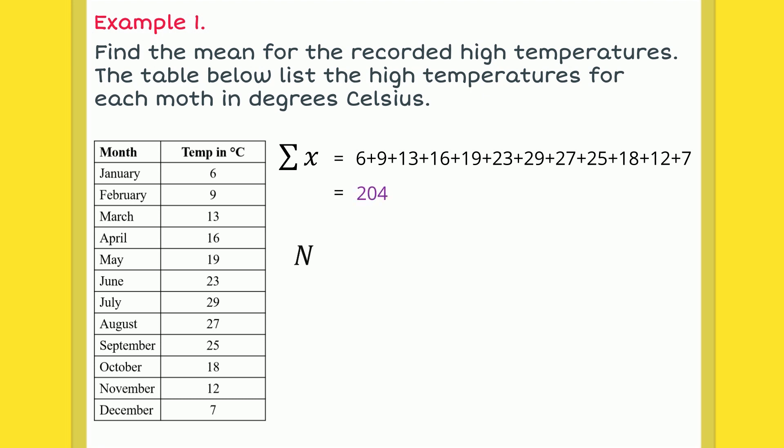This gives us 204. It looks like we have 12 data points, one for each month, so we'll take our total and divide it by 12. This gives us a mean of 17 degrees.